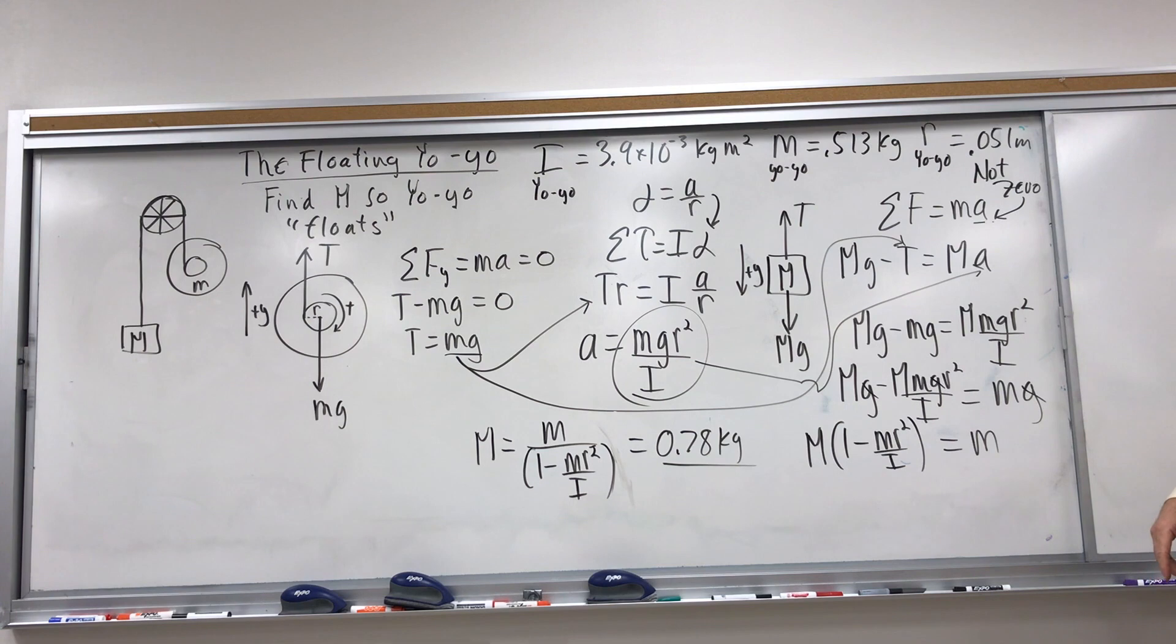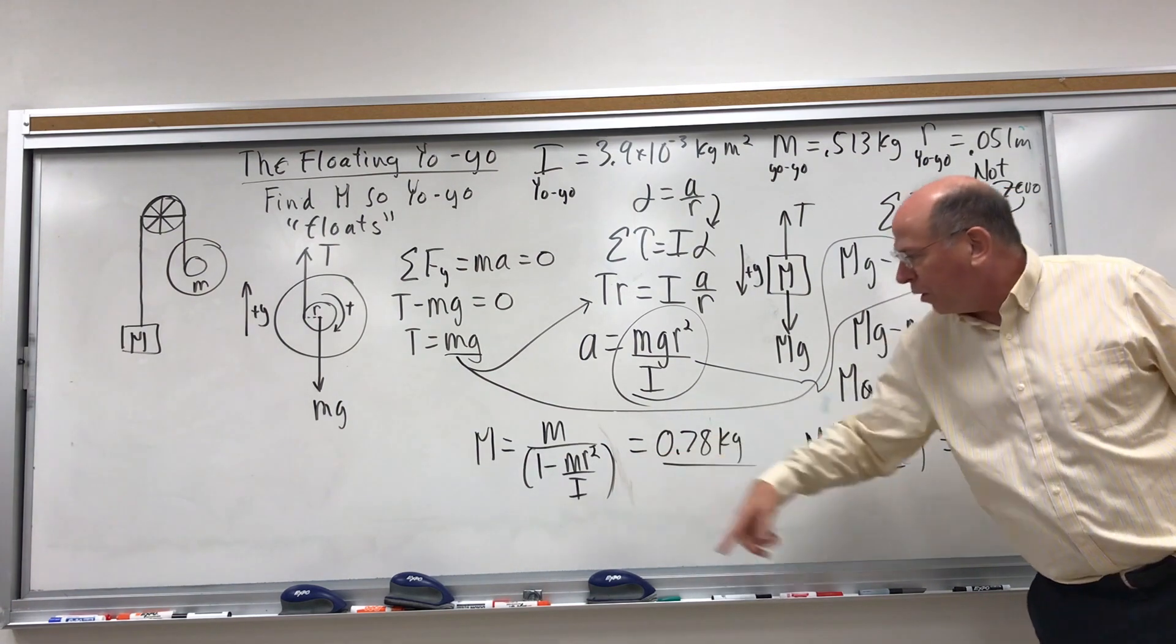Sounds like Donald Rumsfeld there. So my unknown is Big M. I gather my Big M terms. The g cancels and then I can factor Big M out. And then I get this.